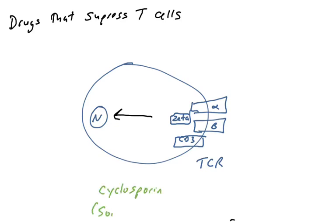There are many compounds that inhibit T-cells, some of which inhibit signaling from the T-cell receptor. One compound we've spoken about previously is cyclosporine, which is isolated from a soil fungus. That compound primarily affects T-cell signaling from the T-cell receptor into the nucleus, either to activate the T-cell or trigger its effector function. So cyclosporine can suppress both naive T-cells from activating as well as effector T-cells.